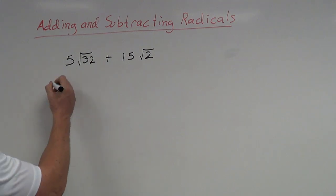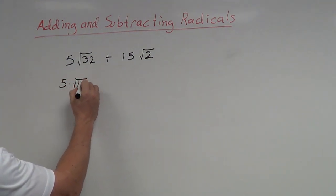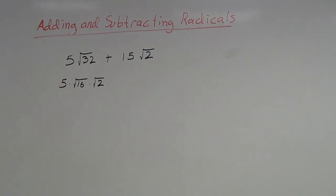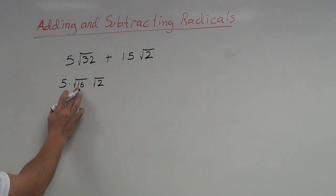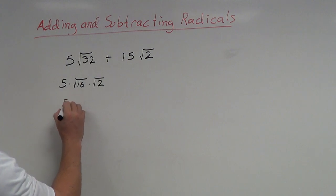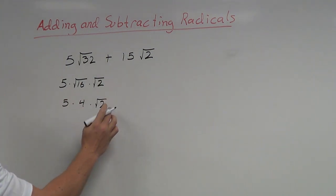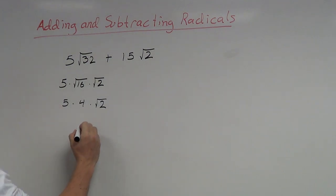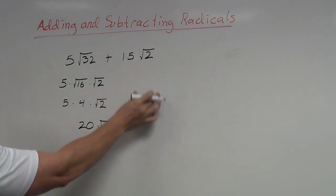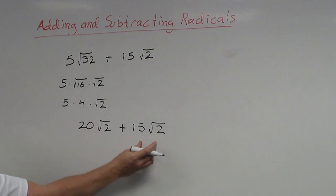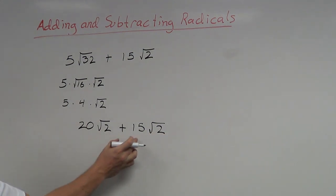I split 32 into 16 times 2, so this becomes 5 times the square root of 16 times the square root of 2. Since 16 times 2 equals 32, and the square root of 16 is 4, I now have 5 times 4 times root 2. I leave root 2 as is since I don't know its exact value. Multiplying 5 times 4 gives me 20 root 2.